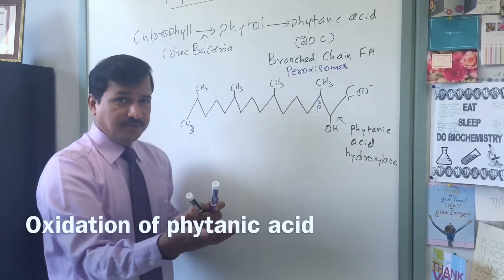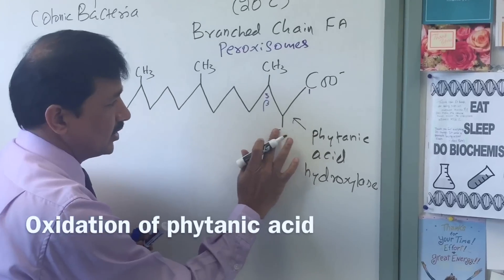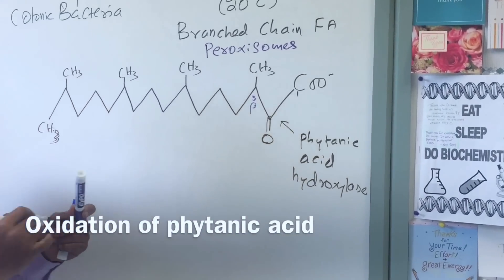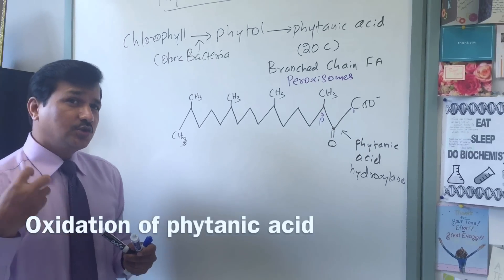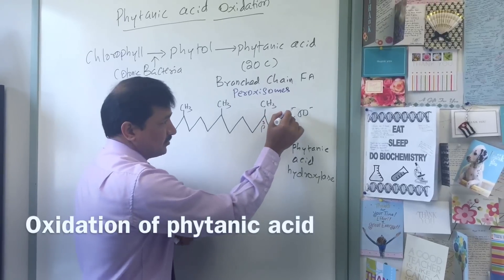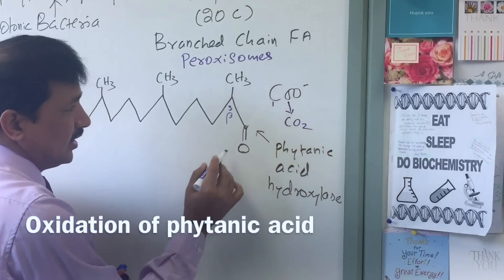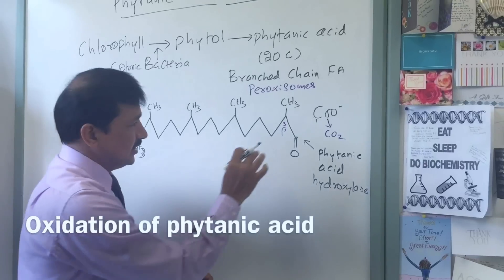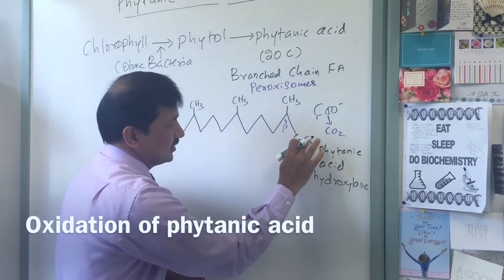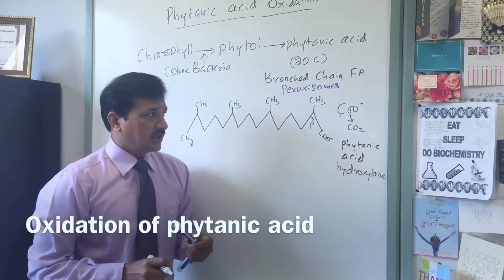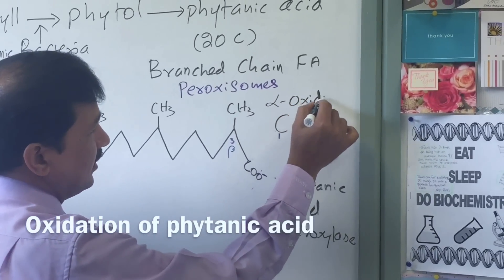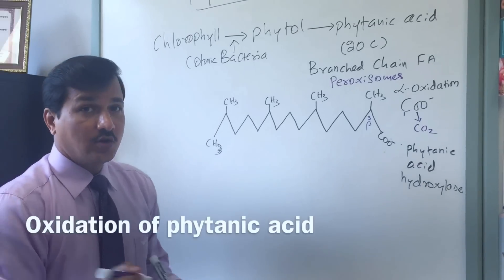The hydroxyl group on the alpha carbon is further oxidized into a keto group (C=O). Further, it is oxidized into a carboxyl group. During that process, this bond is broken — the first carbon is released as carbon dioxide. Now the second carbon, which was initially the alpha carbon, becomes the new carboxyl carbon (COO minus). The first carbon is released as CO2, and this particular process we call alpha oxidation, which goes on in the peroxisome.